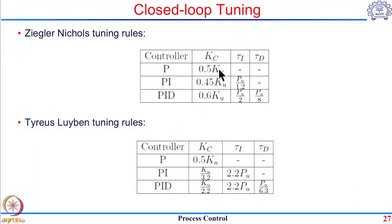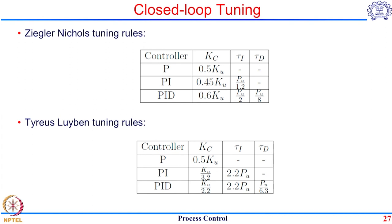A very commonly used methodology is Ziegler-Nichols closed loop tuning, which is different from the Ziegler-Nichols open loop tuning seen earlier. These tuning rules are based on the ultimate gain KU and ultimate period PU. The P controller gain is 0.5 times KU, operating halfway from the stability limit, ensuring the system remains stable. The PI controller has an even slightly lower gain, and the integral time constant is related accordingly. However, Ziegler-Nichols tuning tends to produce very oscillatory responses with a very small damping coefficient.